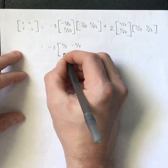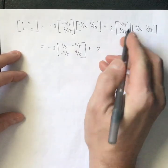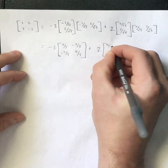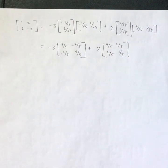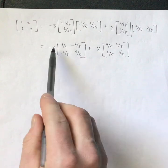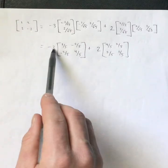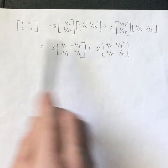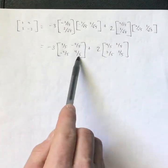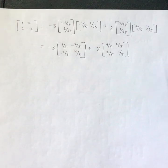So this matrix is going to be 1 5th, negative 2 5ths, negative 2 5ths, 4 5ths. And this matrix is going to be 4 5ths, 2 5ths, 2 5ths, 1 5th. And we can do a quick check just to verify that this decomposition is, in fact, a decomposition. Negative 3 5ths plus 8 5ths is 5 5ths, which is 1. 6 5ths plus 4 5ths is 10 5ths, which is 2. 6 5ths plus 4 5ths, again, is 2. And negative 12 5ths plus 2 5ths is negative 10 5ths, which is negative 2. So this is, in fact, a decomposition.